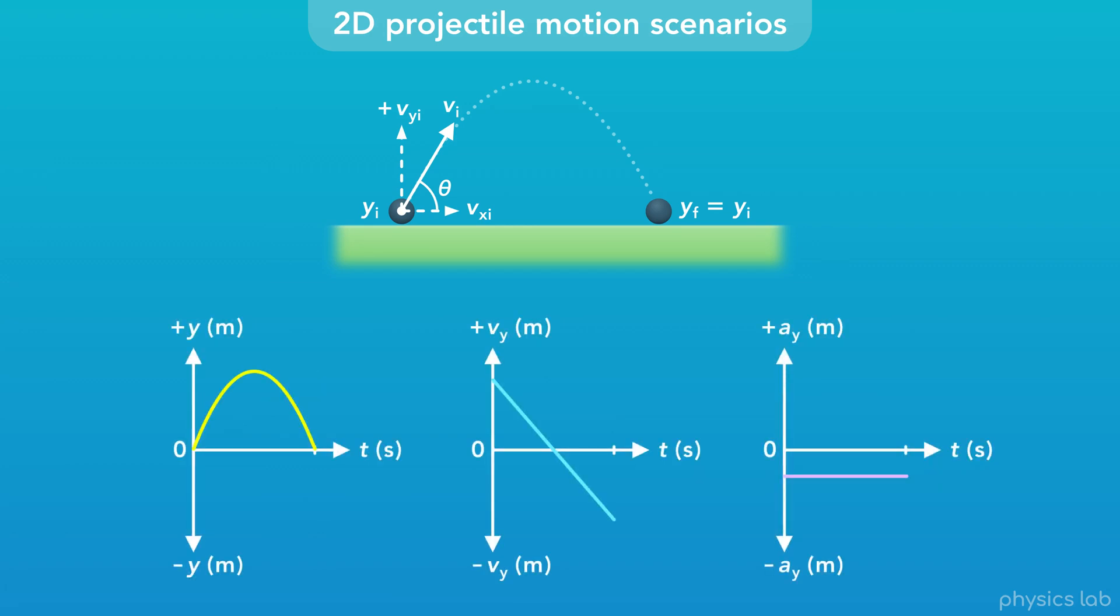And here's the y motion. The y position starts and ends at 0, and the y velocity goes from positive to negative. The object reaches the maximum height and 0 y velocity halfway through the motion.